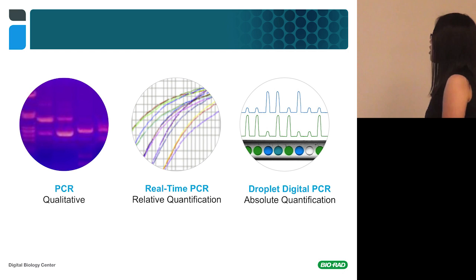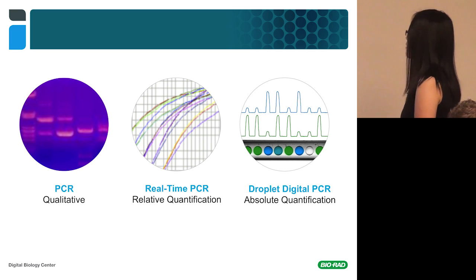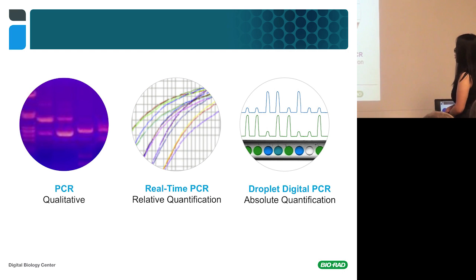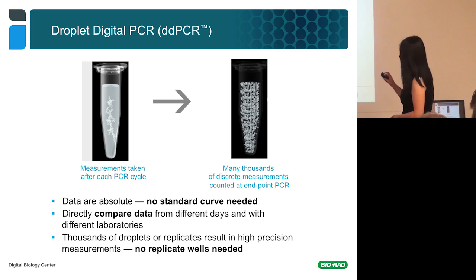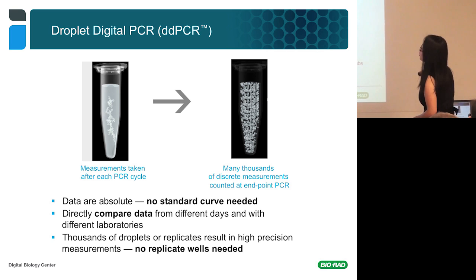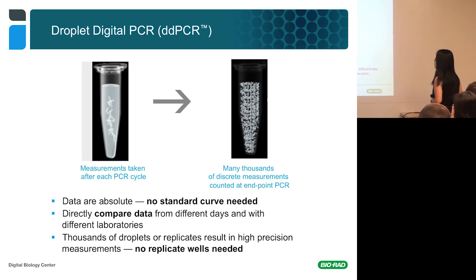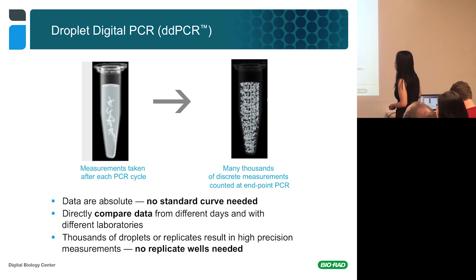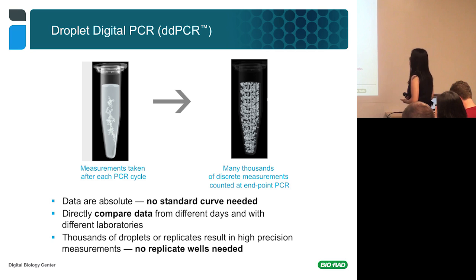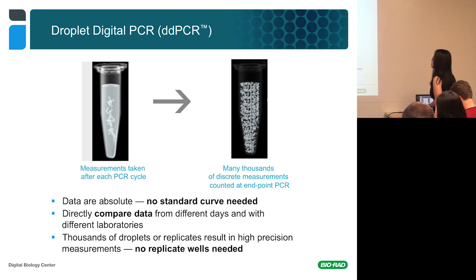There is an answer, and that is Droplet Digital PCR. Droplet Digital PCR, which we call DDPCR, provides absolute quantitation. In a digital PCR, instead of taking a bulk reaction, the reaction is partitioned into many thousands of droplets — in our case, water-in-oil droplets. In real-time PCR you do measurements during each PCR cycle, while in digital PCR these thousands of discrete droplets are measured at the endpoint. Note that in digital PCR we don't need a standard curve because the measurement is absolute, and you can easily compare data from day-to-day and lab-to-lab.